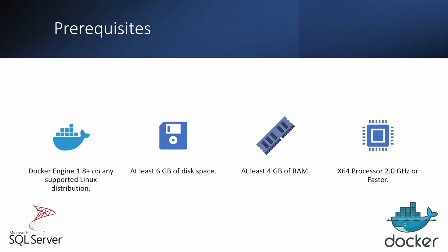The prerequisites are Docker Engine 1.8 - you've got to make sure you've got the latest version. You will need at least six gigabytes of disk space. This is dependent on the size of your database, so if you're going to add a quite large database, you might need more space than that. You'll also need at least four gigabytes of RAM on top of your current operating system needs.